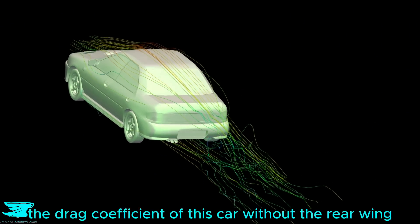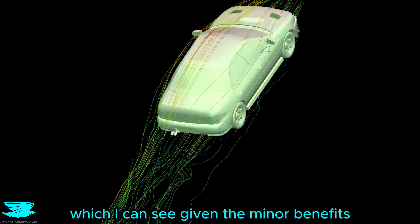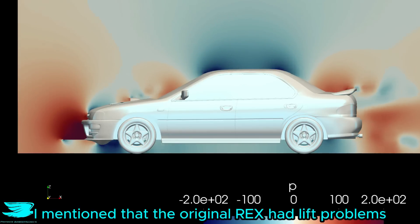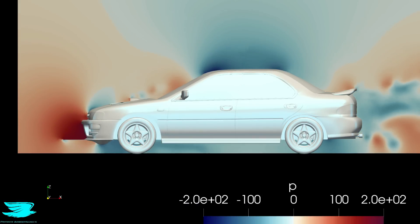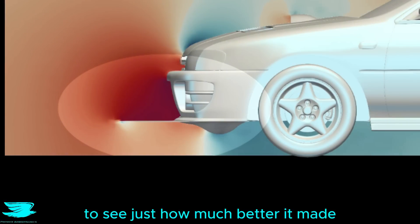Overall, the drag coefficient of this car without the rear wing came in at 0.37, which I can see given the minor benefits that the rear wing produced in the rear wake. Finally, I mentioned that the original Rex had lift problems. We also did a simulation with a decent size front splitter plate to see just how much better it made the Rex's aerodynamics, or if it did at all.